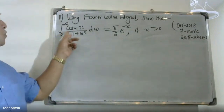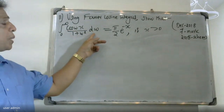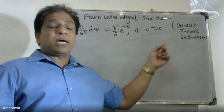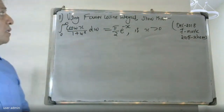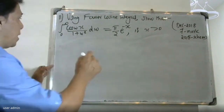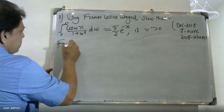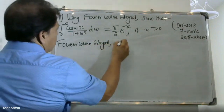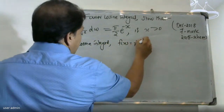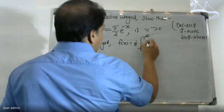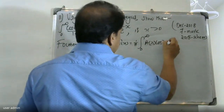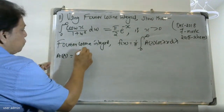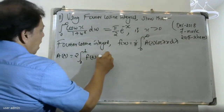For the Fourier cosine integral, the formula is: f(x) = (1/π) ∫₀^∞ A(λ) cos(λx) dλ, where A(λ) = 2 ∫₀^∞ f(t) cos(λt) dt.